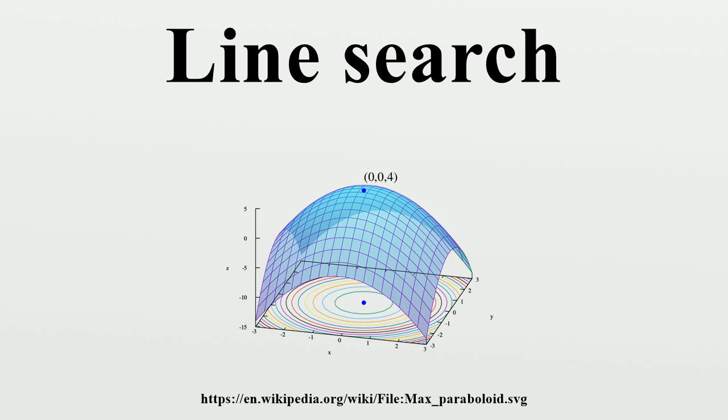The line search approach first finds a descent direction along which the objective function will be reduced, and then computes a step size that determines how fast to move along that direction.